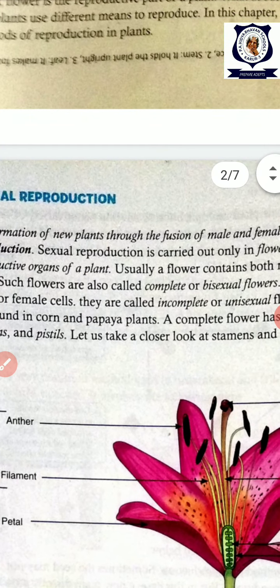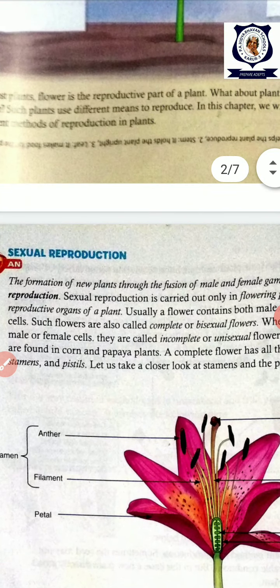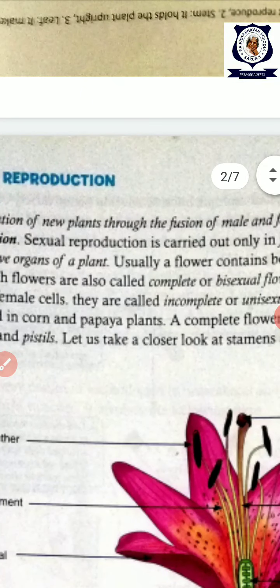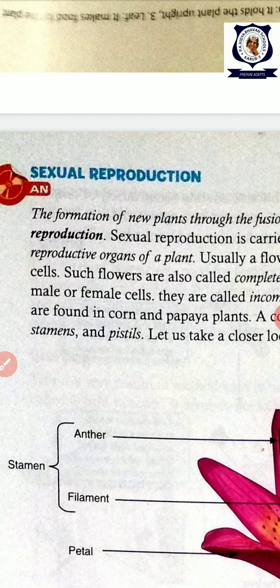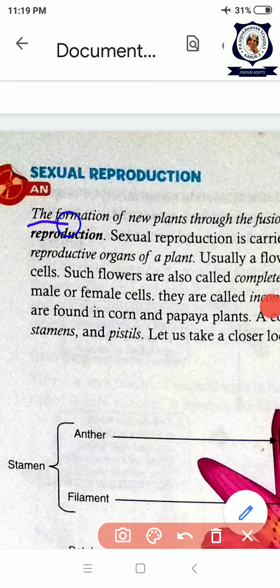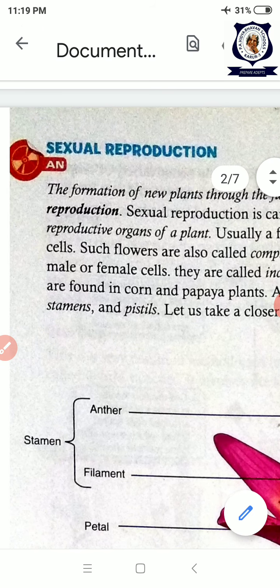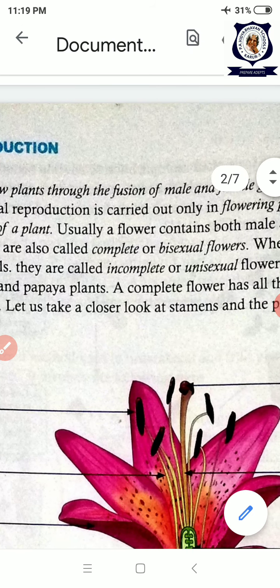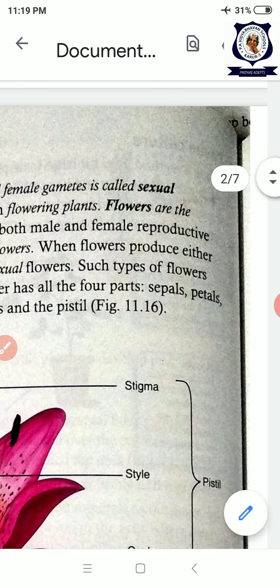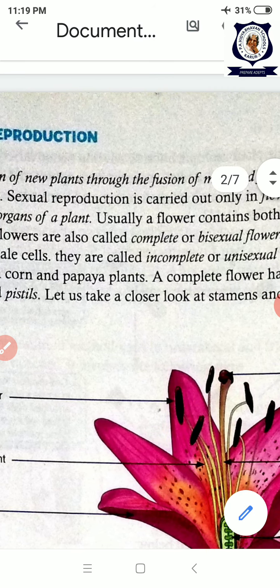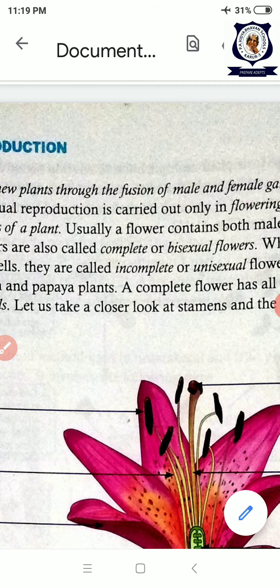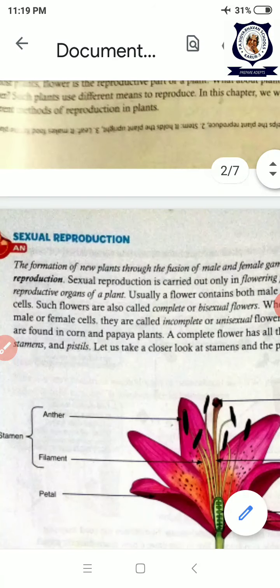In this class what we are going to see is sexual reproduction in plants. What is sexual reproduction? The fusion of two gametes — that is called sexual reproduction. So what is sexual reproduction? The formation of a new plant through the fusion of male and female gametes is called sexual reproduction. Sexual reproduction is carried out only in flowering plants, because the flowers are the reproductive organs.